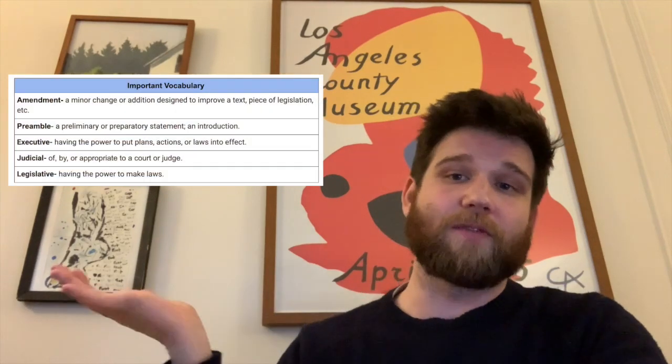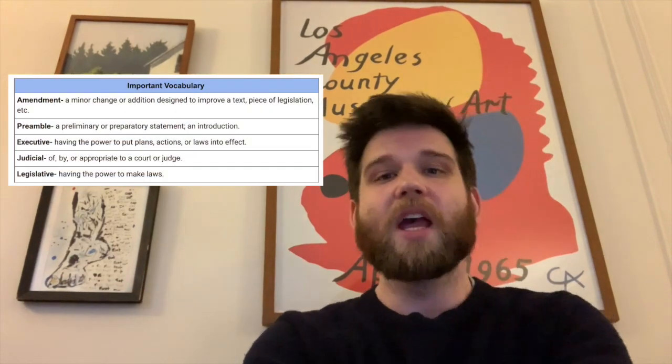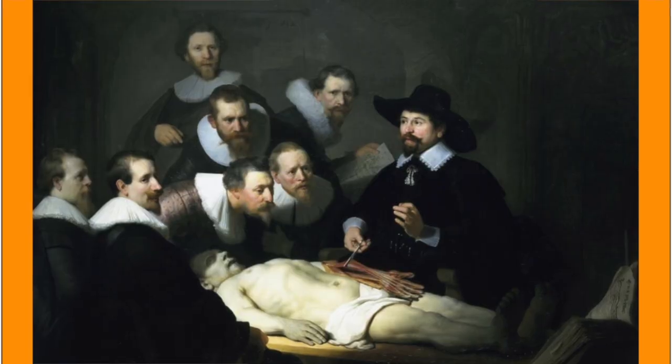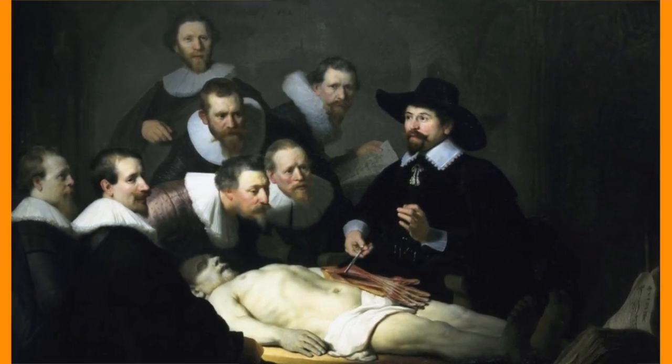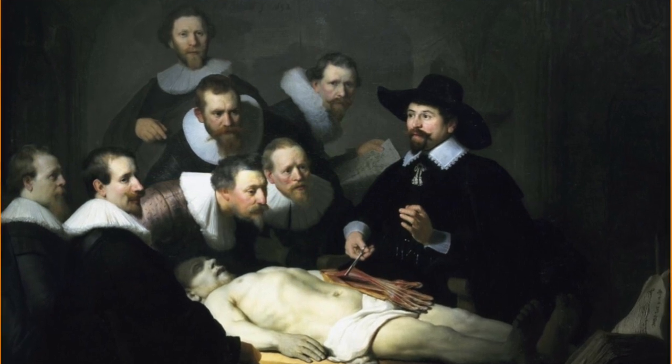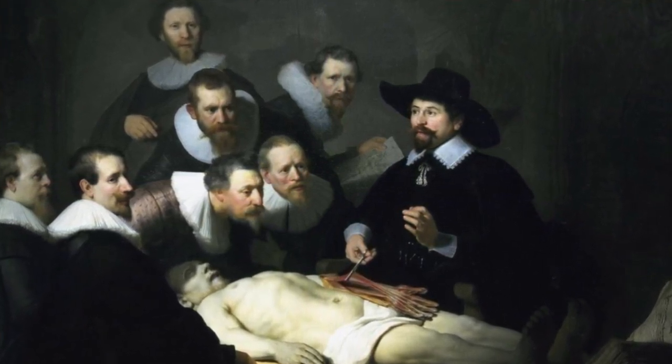So we're going to talk about the anatomy of the U.S. Constitution. Like always, we have our vocab words right there. We're going to start with a warm-up. This is a very famous painting called The Anatomy Lesson of Dr. Tulp. It was painted by Rembrandt in the year 1632, who was a member of the Dutch School of Painting from The Hague. It has very little to do with what we're talking about, aside from the fact that it is dealing with anatomy. Anatomy means studying the parts or structure of something — what it is made up of.